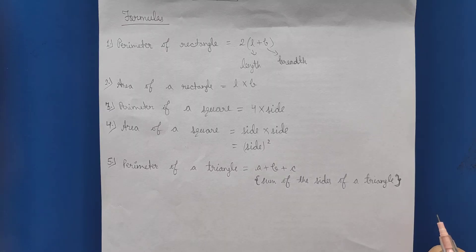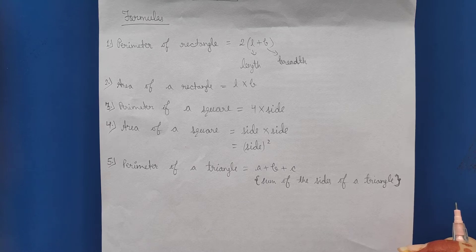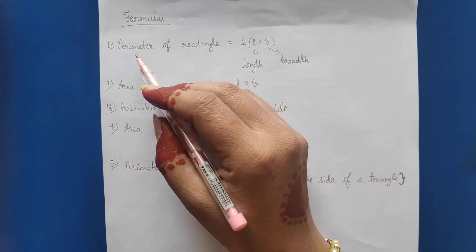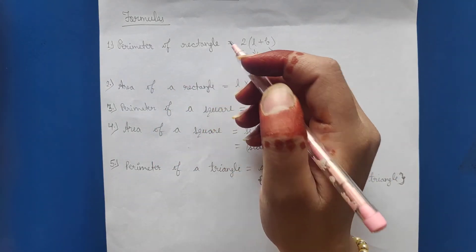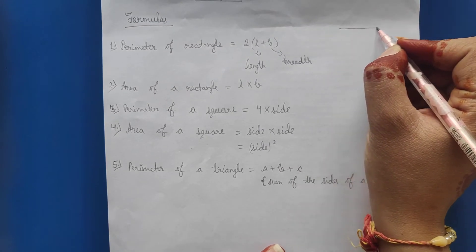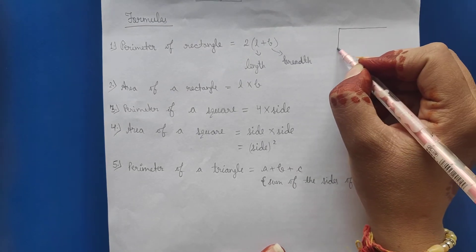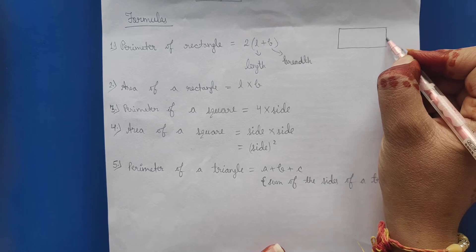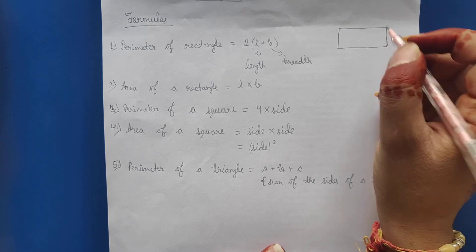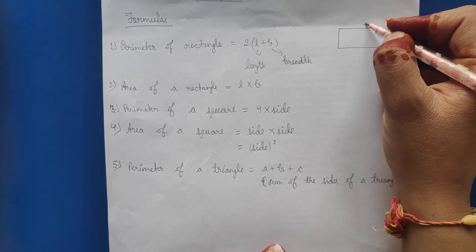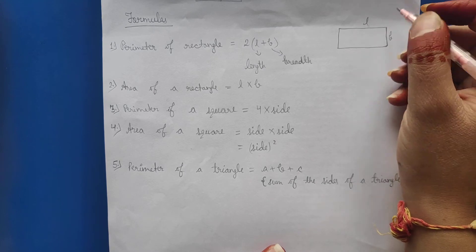Okay students, now we will revise some important formulas related to perimeter and area. And the first is perimeter of rectangle. So students, rectangle ka perimeter kya hota hai? Suppose we have a rectangle.